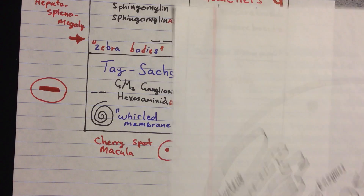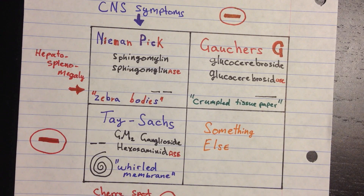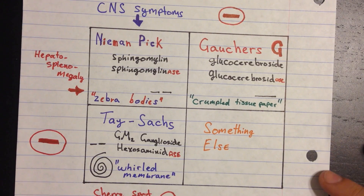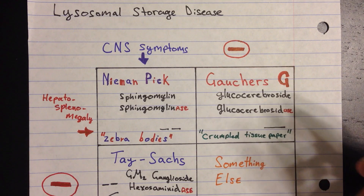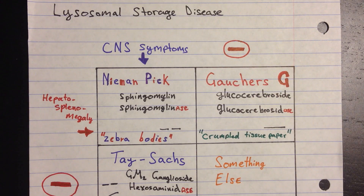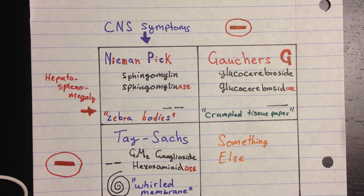Now, the three main diseases to think about here are Niemann-Pick, Gaucher's, and Tay-Sachs. We're going to talk about them today, as well as how almost all these diseases can be distinguished by concentrating on two symptoms: CNS symptoms and hepatosplenomegaly. If you have one or both of these symptoms, it's a good chart to think about if you think you're dealing with a lysosomal storage disease.